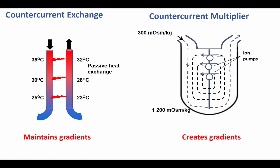A countercurrent exchanger's main function is maintaining gradients — the gradient differences between the two tubules are only very small. On the other hand, a countercurrent multiplier will create gradients. The origin of the hyperosmotic medullary interstitium is caused by the countercurrent multiplier, not the exchanger. The countercurrent exchanger is typically found in the vasa recta of the kidney, where its main function is to preserve the hyperosmotic medium created by the countercurrent multiplier.